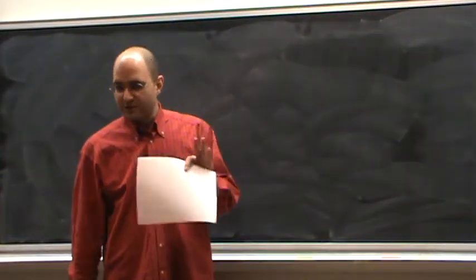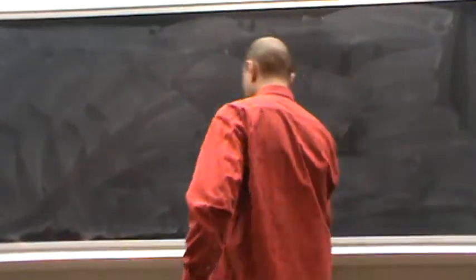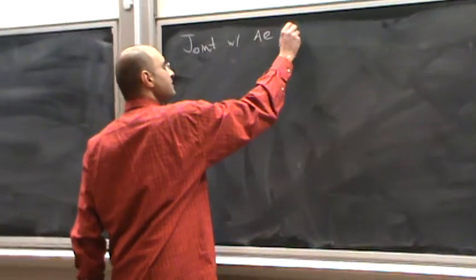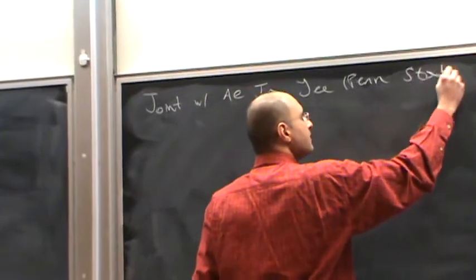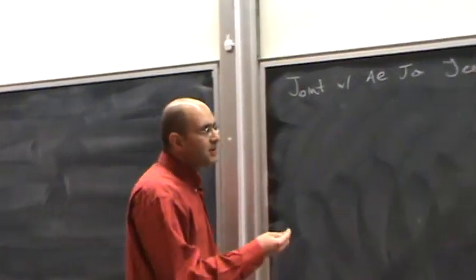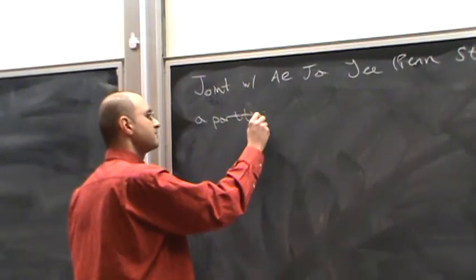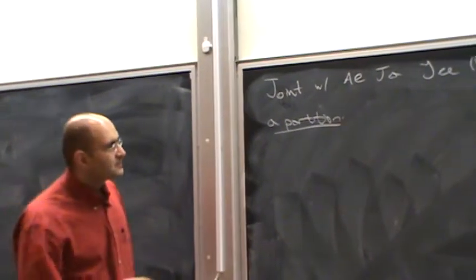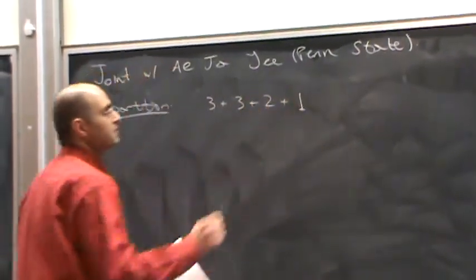First of all, this is joint work with my professor and colleague, Eiza Yee. We'll begin with some preliminaries. A partition of a positive integer is a finite sequence of unordered positive integers. For instance, V plus 3 plus 2 plus 1.